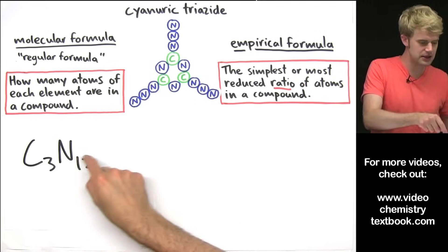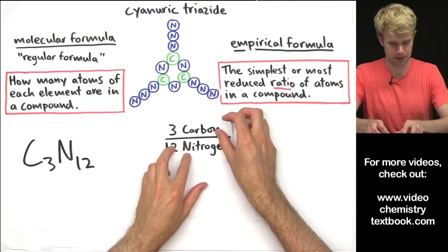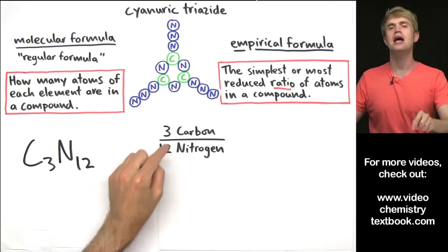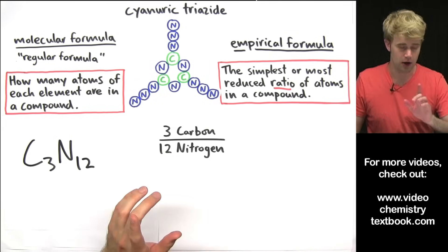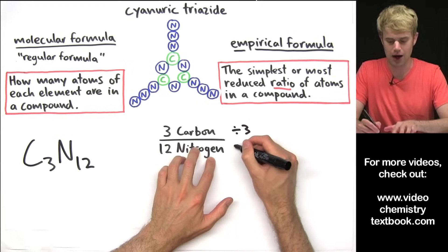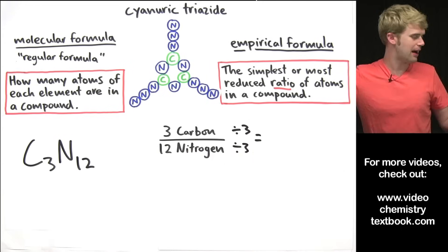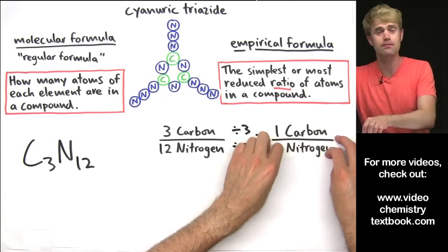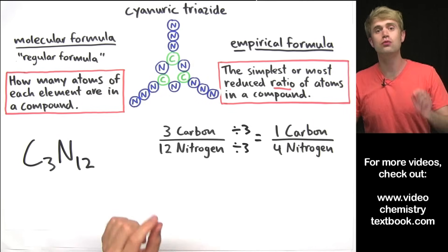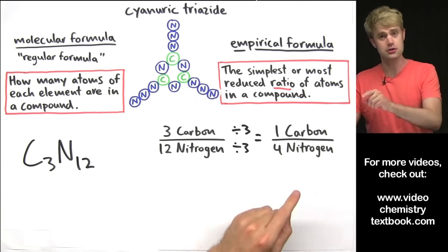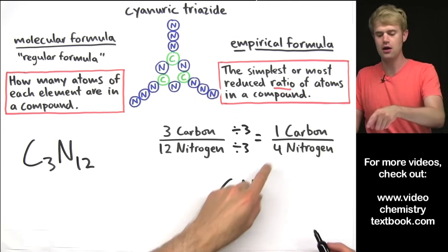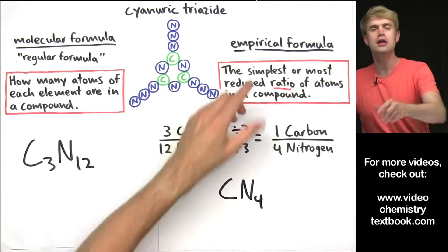Now for the empirical formula, we want to take this and write it as a ratio: 3 carbons over 12 nitrogen. We want to ask ourselves how can we simplify this as much as possible? What's the biggest number that we can divide both of these by? In this case it's 3. Dividing both by 3 gives us 1 carbon over 4 nitrogen. So we write the empirical formula as CN4.